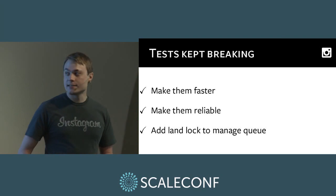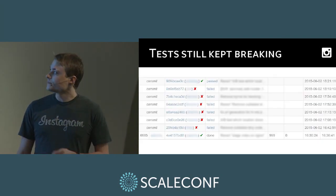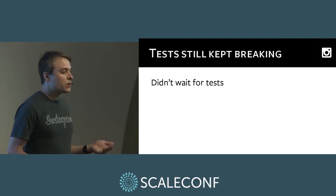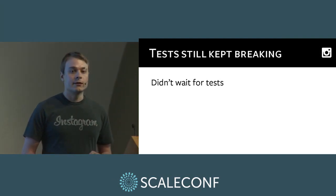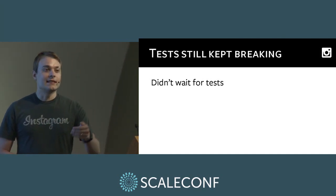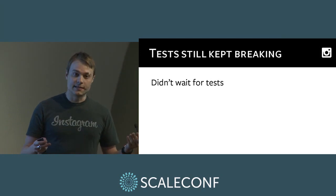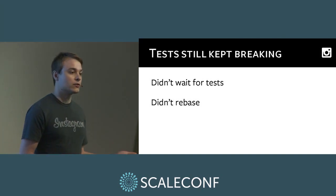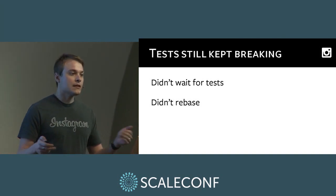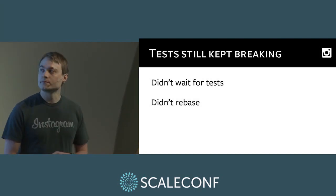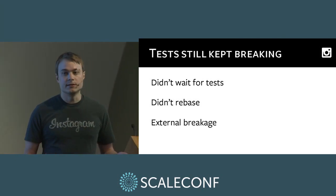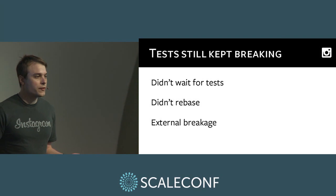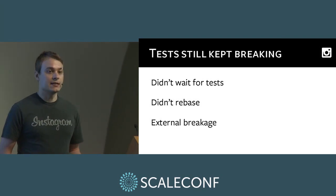So everything was going to be awesome now, right? Not quite. It still looked broken six months later. Engineers didn't wait for the test to run. What often happened is they'd have their diff accepted, make a minor change, update it, land it, but that minor change broke the tests. Or they didn't rebase — they'd created their branch a week ago, everything was fine on that week-old code, but when all the newer code got integrated on merge, there'd be some interaction that broke the tests. Or there was external breakage from integration tests talking to remote services — not the diff author's fault, but still leaving us without clean test runs for deployment.